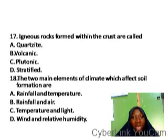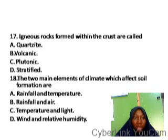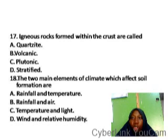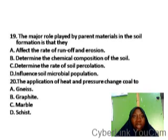Question eighteen: the two main elements of climate which affect soil formation are dash. Options are: A. rainfall and temperature, B. rainfall and wind, C. temperature and light, D. wind and relative humidity. The two climatic elements with the most pronounced action on soil formation are rainfall and temperature, making option A the correct answer.